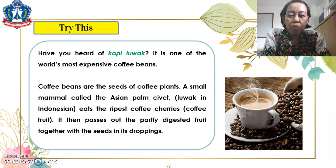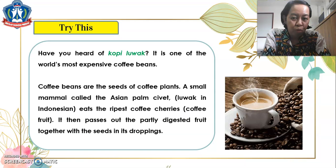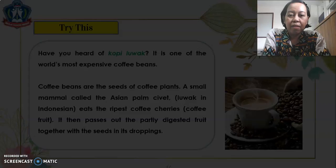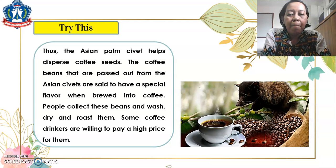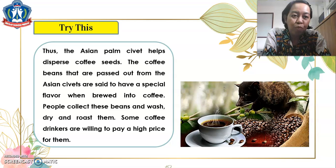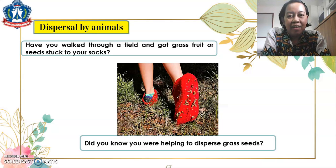In the 'Try This' section — have you heard of kopi luwak? It is one of the world's most expensive coffees. Coffee beans are the seeds of coffee plants. A small mammal called the Asian palm civet eats the ripest coffee cherries. It then passes out the partly digested fruit together with the seeds in its droppings, thus helping disperse coffee seeds. The coffee beans passed out by the Asian palm civet are said to have a special flavor when brewed. People collect these beans, then wash, dry, and roast them, and some coffee drinkers are willing to pay a high price for them.